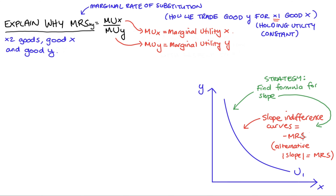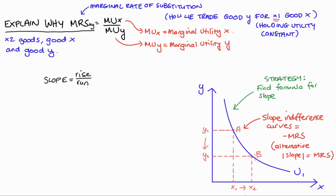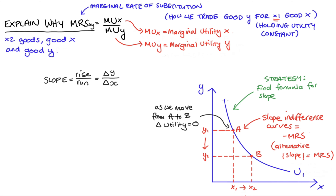We find the slope of a line by taking rise over run as we move between two points along that line — maybe between two points A and B on my diagram here. Because y is on the vertical axis, the rise value will be the change in y, and the run value will be our change in x, since x is the variable on the horizontal axis. We also know that as we move between point A and point B, utility doesn't change — the change in utility equals zero — because every point along an indifference curve corresponds to exactly the same level of utility.